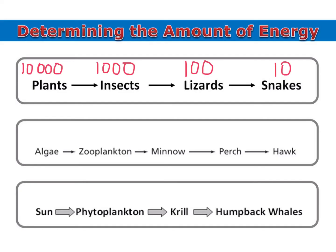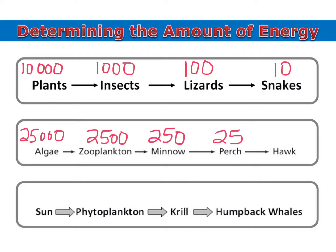Looking at the next food chain, let's say they told us that 25,000 kilocalories were in the algae. That would mean that 2,500 kilocalories were in the zooplankton population, 250 kilocalories in the minnow population, 25 in the perch, and 2.5 in the hawk population. Notice that I just keep moving where the decimal would be over to the left, making it smaller each time.